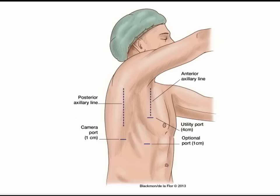The utility port is approximately three centimeters in length, with an additional one centimeter posterior port in the posterior axillary line in the seventh to eighth intercostal space, and an optional port in the anterior axillary line in the sixth to seventh intercostal space. These three ports can be used for any right-sided thoracoscopic lung resection.